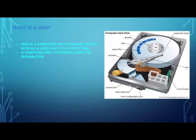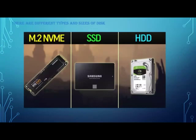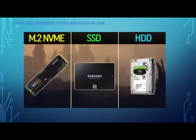With SSD, you can see it doesn't have any disks and it doesn't have any read or write heads, so files open faster. NVMe M.2 is the same as SSD but a bit smaller, and it's installed directly in the motherboard. SSD is installed in the motherboard with some wires. You can see NVMe has a yellow connector and you insert it directly into your motherboard.